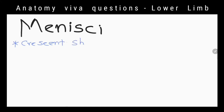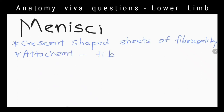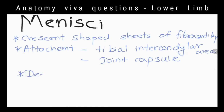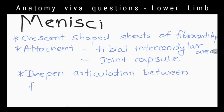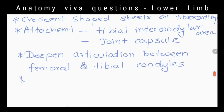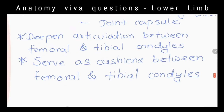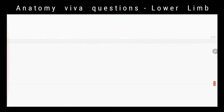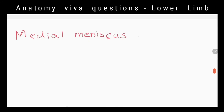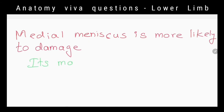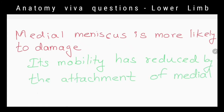What are the menisci and what are their functions? They are crescent-shaped sheets of fibrocartilage. They are attached by their extremities to the tibial intercondylar area and by their periphery to the capsule of the knee joint. They deepen the articulation between the femoral and tibial condyles, serve as cushions between them, and act as shock absorbers. Which meniscus is more likely to be damaged? The medial meniscus, because its mobility is reduced by the attachment of the medial collateral ligament.